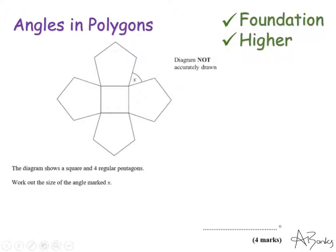Now I'll look at solving a problem. The diagram shows a square and four regular pentagons — work out the size of the angle marked x. Around the point where x is, there are four angles. If I can find the other three angles, I can find x. A square has a right angle as its interior angle, so I'll label that as 90 degrees. Examiners will mark your diagrams, so it's fine to write on them.